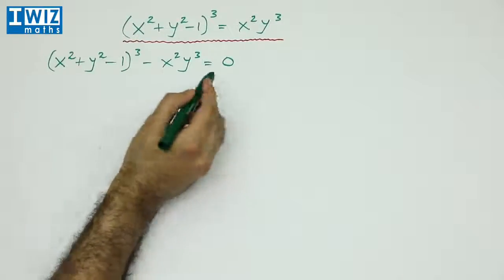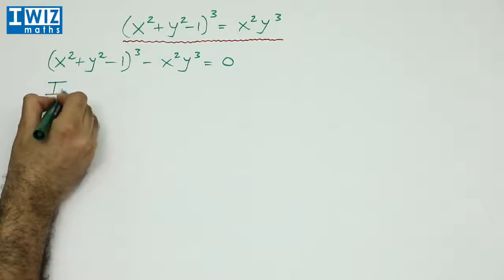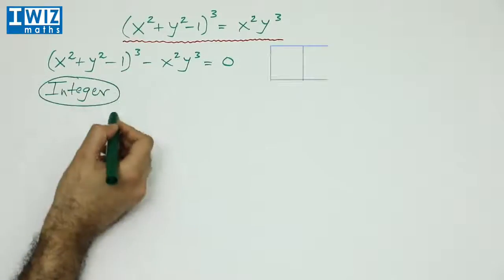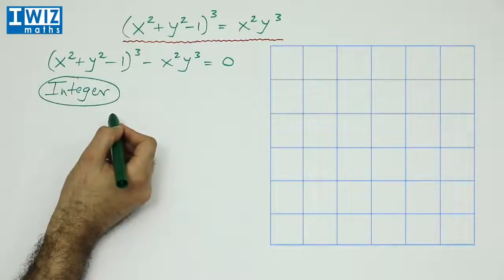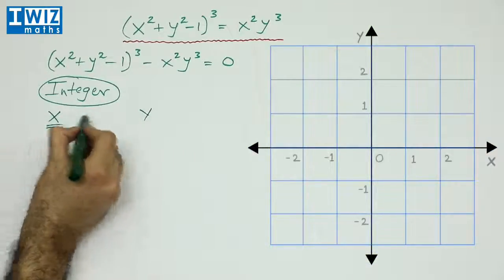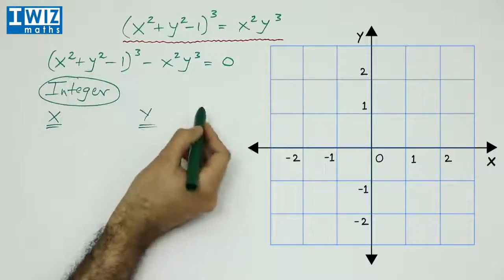The first thing to do is usually to look for simple solutions. So we will start by looking for integer solutions. Essentially we are after integer values of x and integer values of y such that when we plug those integer values into this equation, the right hand side equals 0.